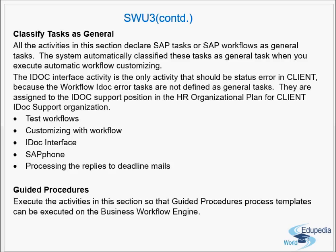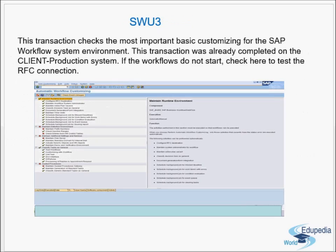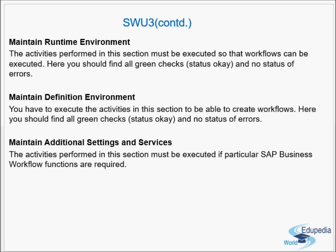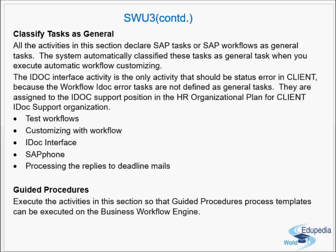The last section under SWU3 is Guided Procedures. Execute the activities in this section so that guided procedure process templates can be executed on the Business Workflow Engine. So in SWU3 we have five sections: Maintain Runtime Environment, Maintain Definition Environment, Maintain Additional Settings and Services, Classify Tasks as General, and Guided Procedures. We activate what is necessary.